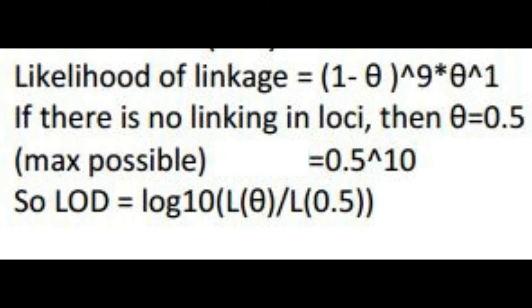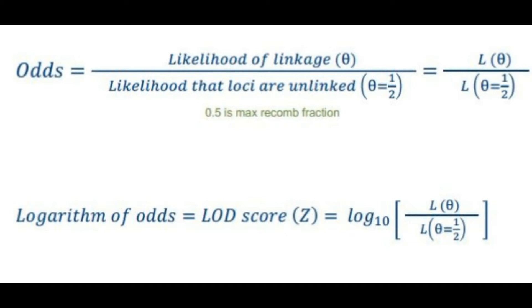the number of non-recombinants, multiplied by theta raised to the power of the recombinants. If we do not find any linkage in the loci, then the max theta is taken as 0.5 or 1/2. For this case, the log of linkage disequilibrium, the LOD score, will be given by log base 10 of the fraction L(theta) over L(0.5).